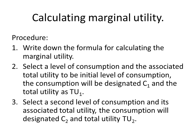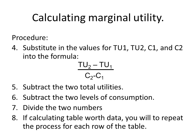The procedure for calculating marginal utility is straightforward. Step one: write down the formula. Step two: select a level of consumption and its associated total utility, designated as C1 and TU1. Step three: select a second level of consumption and its utility, designated as C2 and TU2. Step four: substitute the values into the formula TU2 minus TU1 divided by C2 minus C1, subtract the utilities, subtract the consumption levels, and divide. Repeat for the entire table if needed.